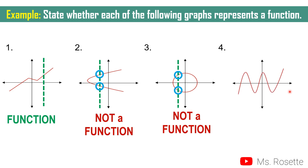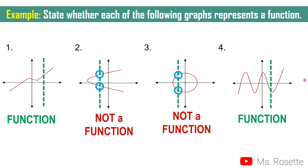How about this one? Draw a vertical line anywhere — for example, here. It only intersects at one point. We may try on the other side — again, it also intersects at one point. Therefore, this is considered a function.